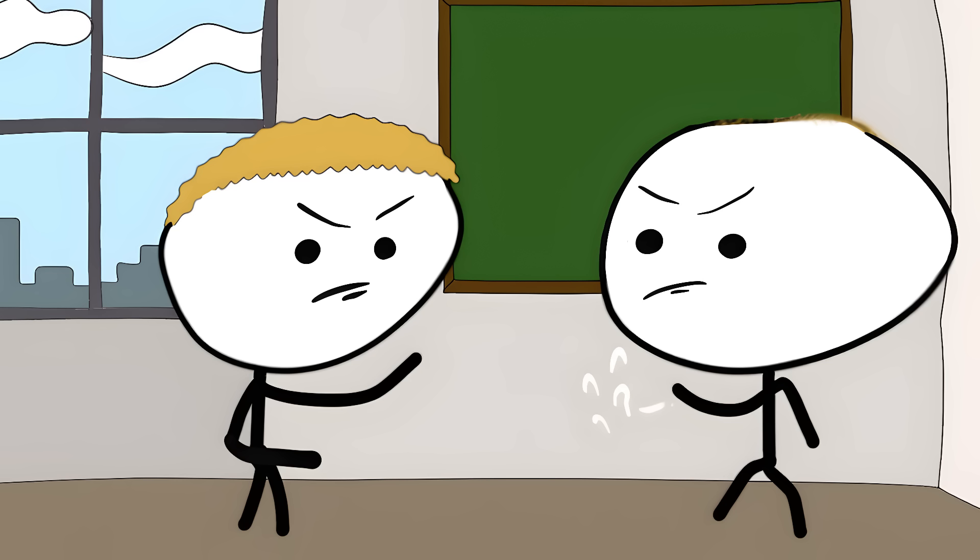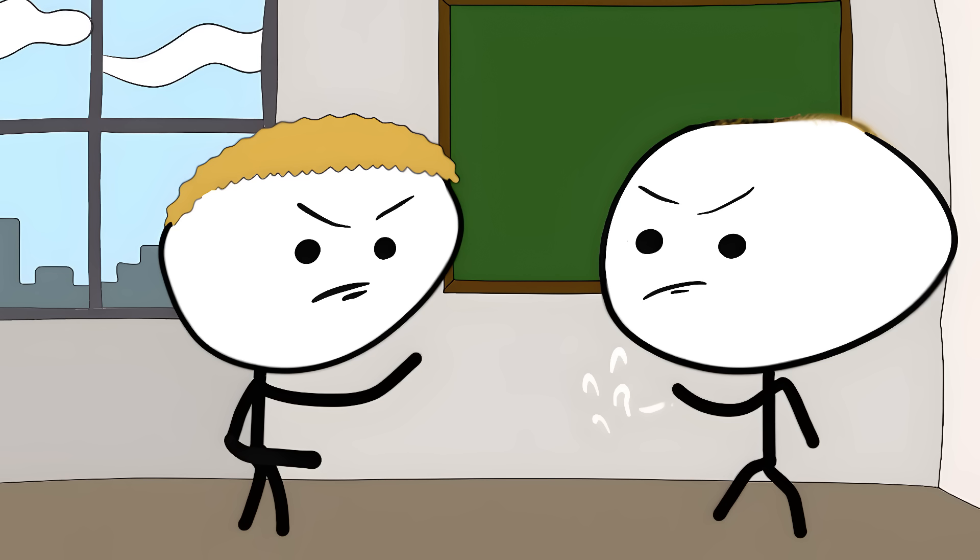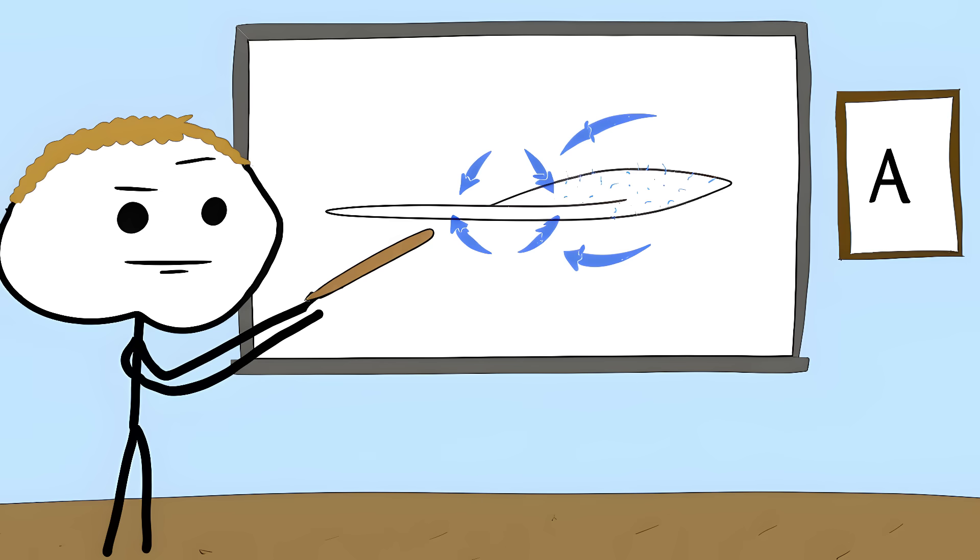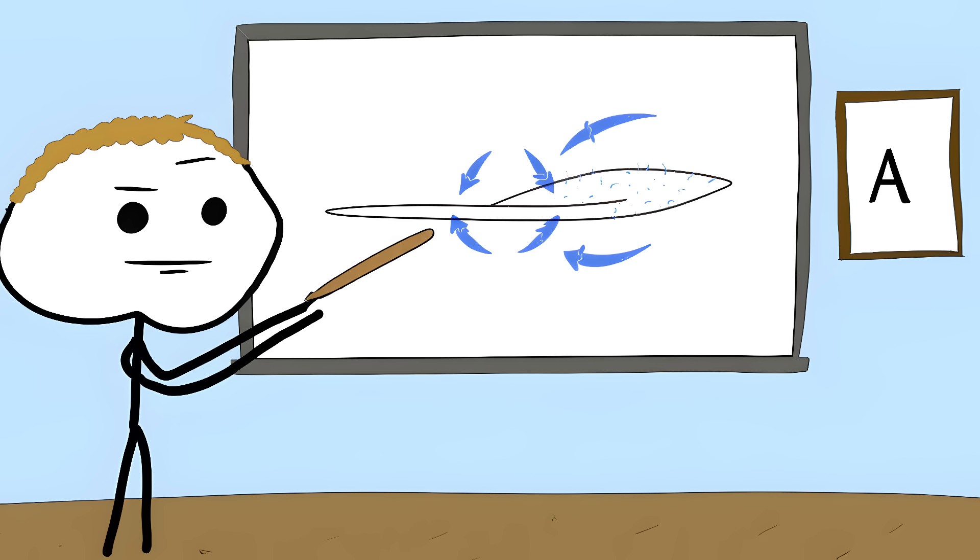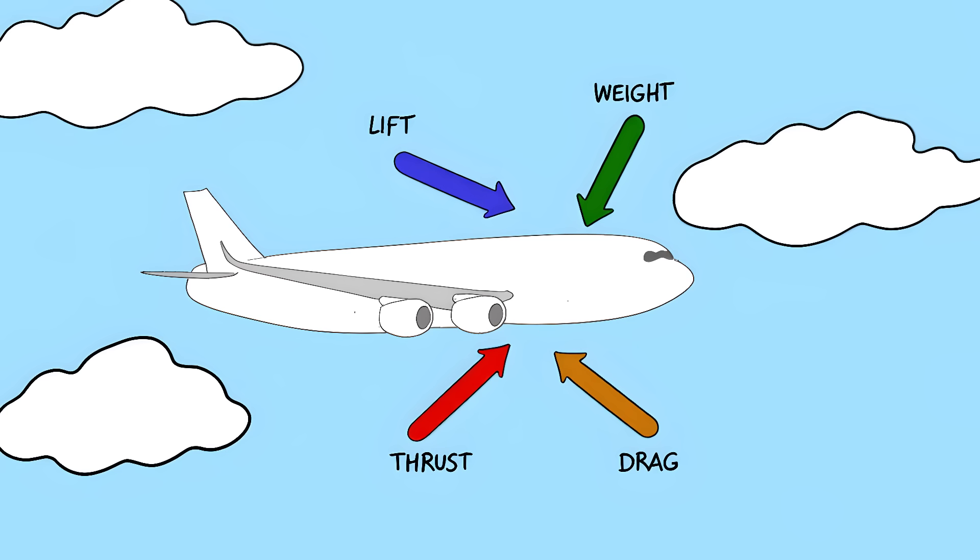How airplanes stay in the air. Here's a fun fact. Even aerospace engineers argue about this one. Oh, the wings are curved, so the air moves faster on top, creating lift. Sounds smart until you realize that's only part of the story.